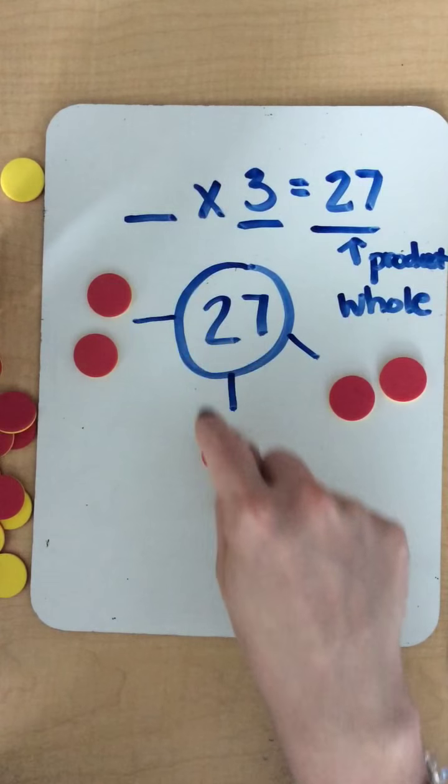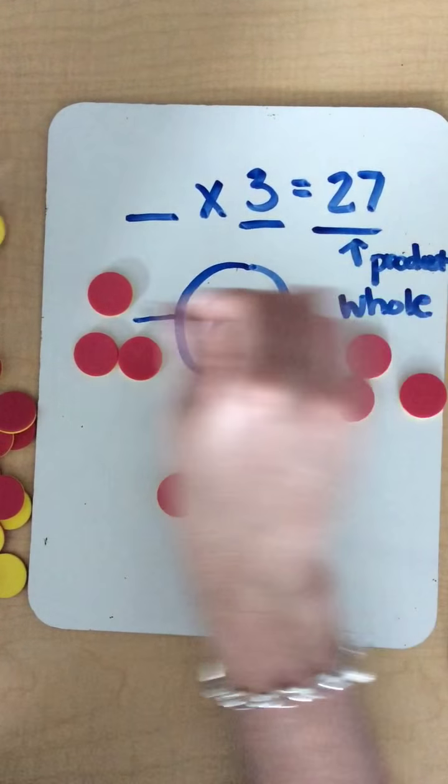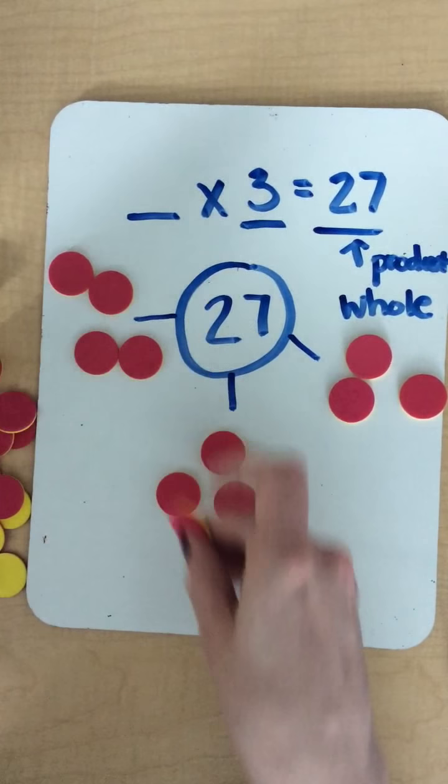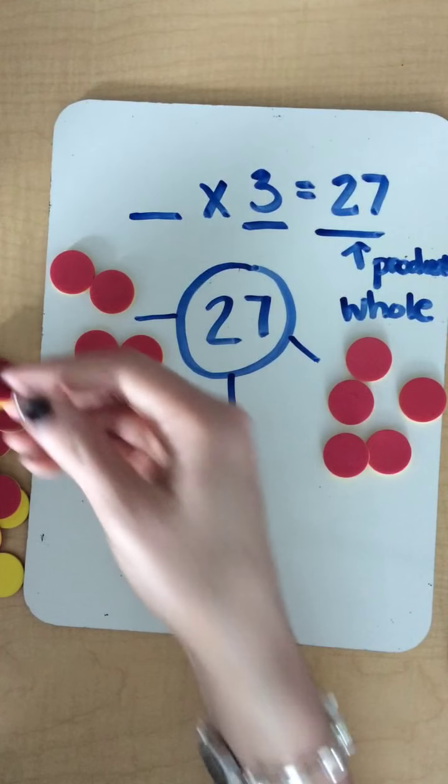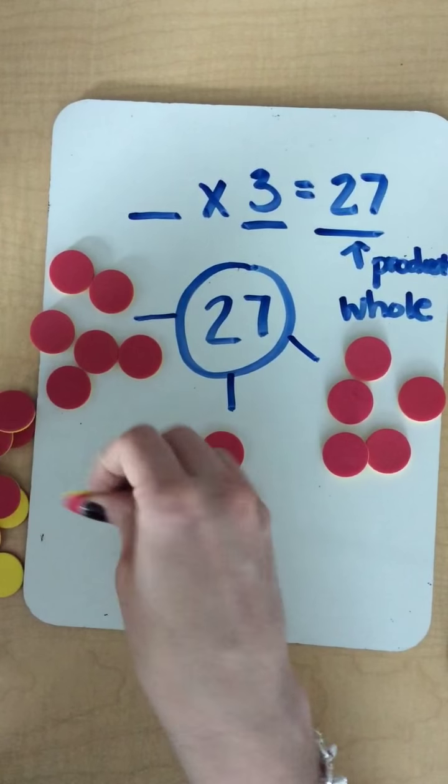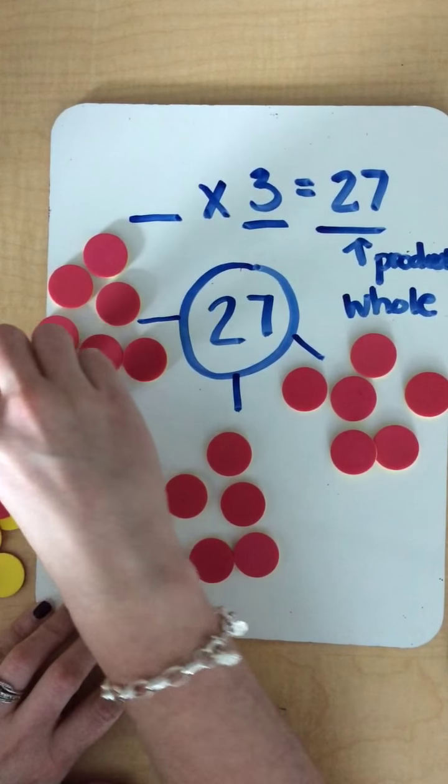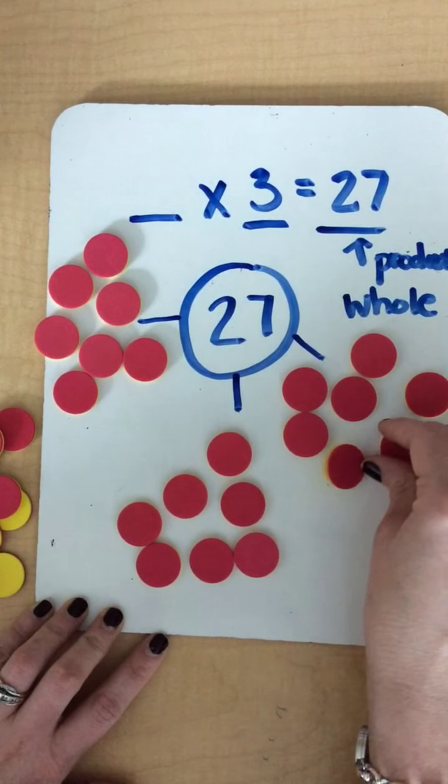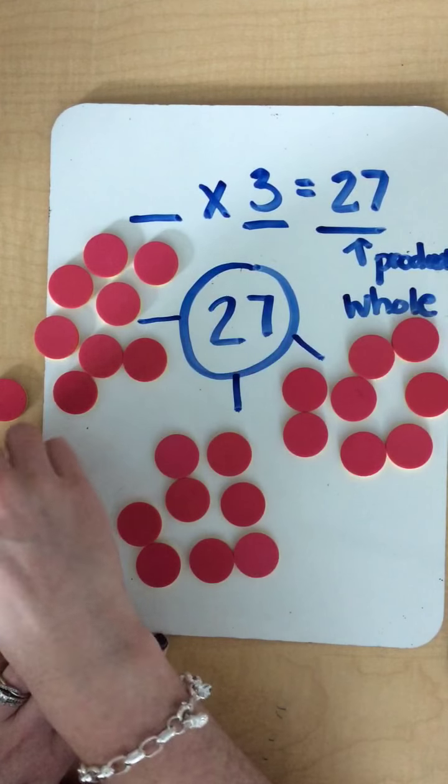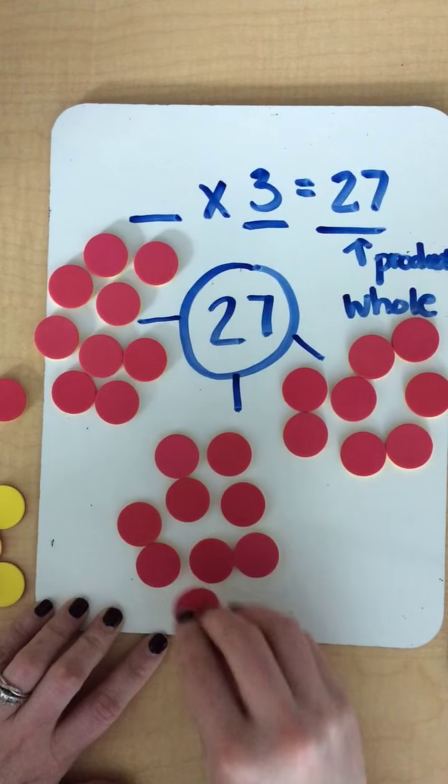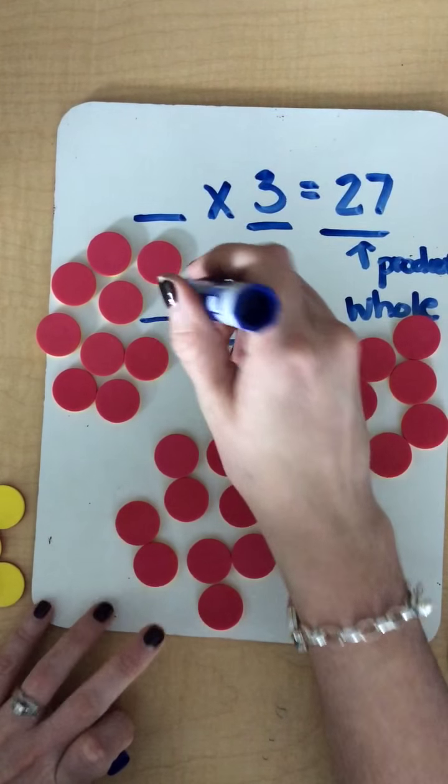So right now what I've counted is I have 1, 2, 3, 4, 5, 6, 7, 8, 9, 10, 11, 12, 13, 14, 15, 16, 17, 18, 19, 20, 21, 22, 23, 24, 25, 26, 27. So I've reached the number 27.